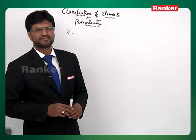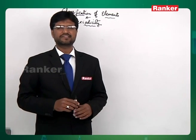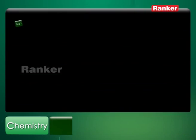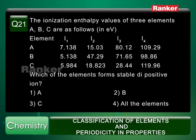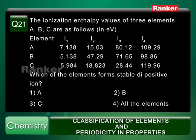Question number 21. The ionization enthalpy values of three elements A, B and C are as follows in electron volts. Element A: I1 is 7.138, I2 is 15.03, I3 is 80.12 and I4 is 109.29.